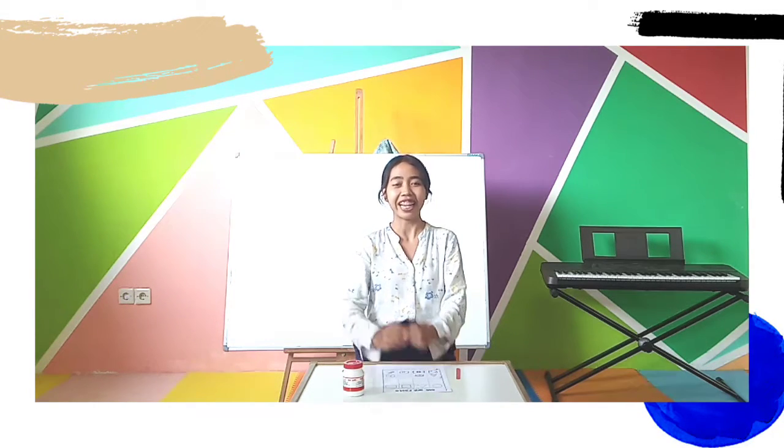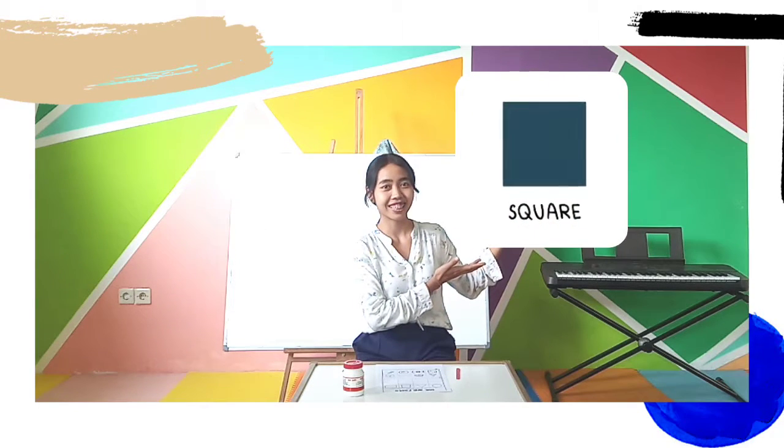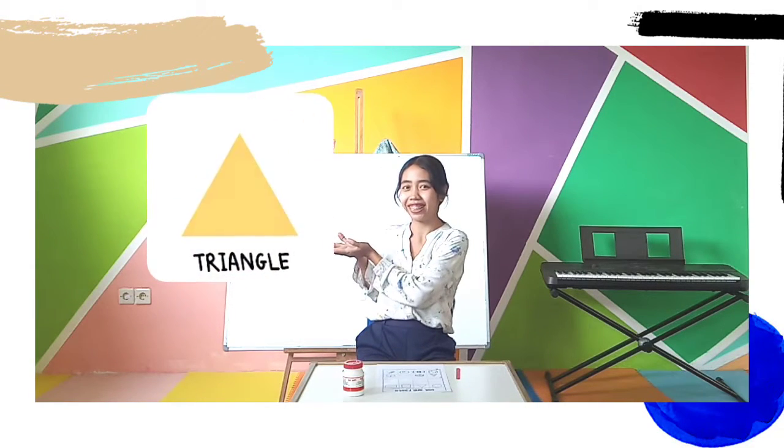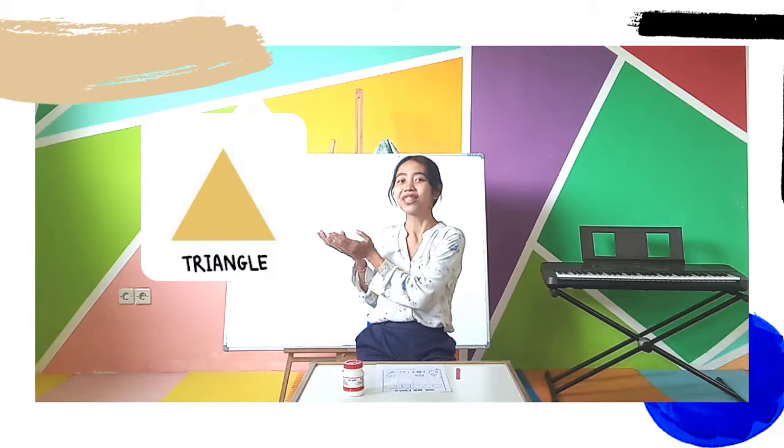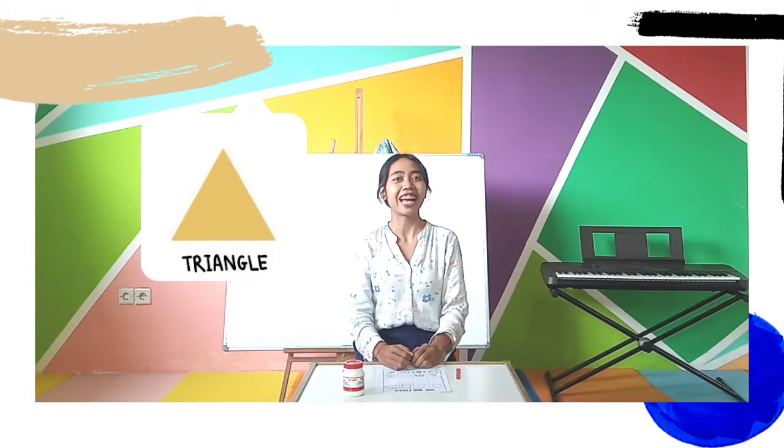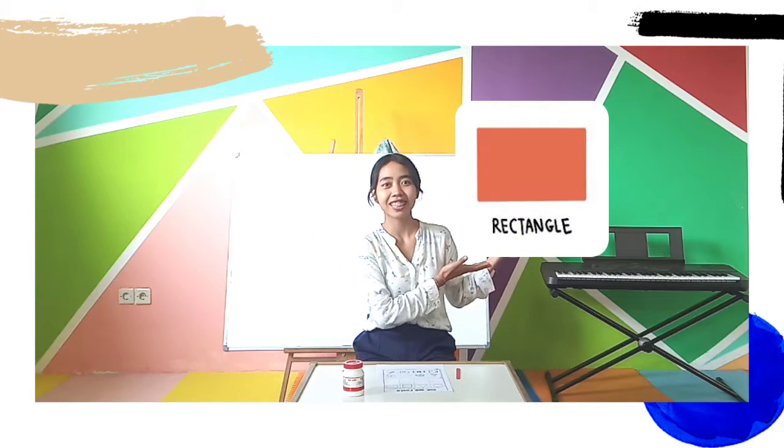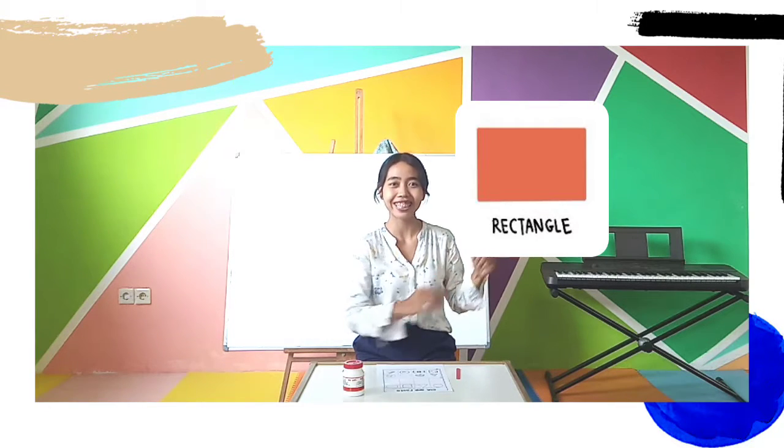The first one, I have... yeah, circle. That's a circle. Next, it's a square. Good job. This one, triangle. And the last one is rectangle. Good job RainbowKids!